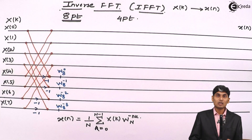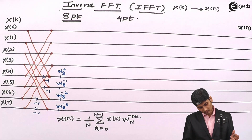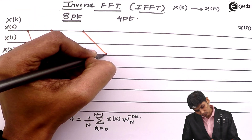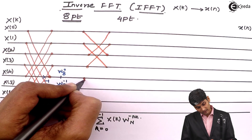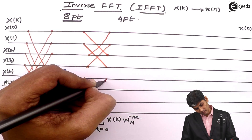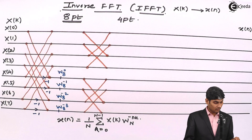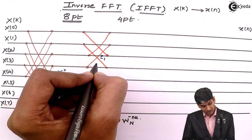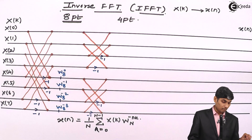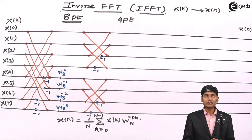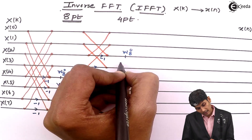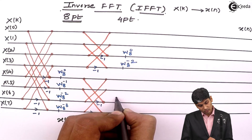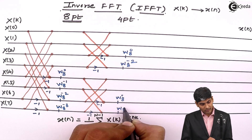Then we go for smaller four sets of crisscross. In this set, the first line goes to the third line and the second line goes to the fourth line, and so on. We will have minus 1 as the multipliers on the last two lines. Now we have done with stage 2. The multipliers in this stage are W8 raised to 0 and W8 raised to minus 2, and similarly W8 raised to 0 and W8 raised to minus 2 for the second group.